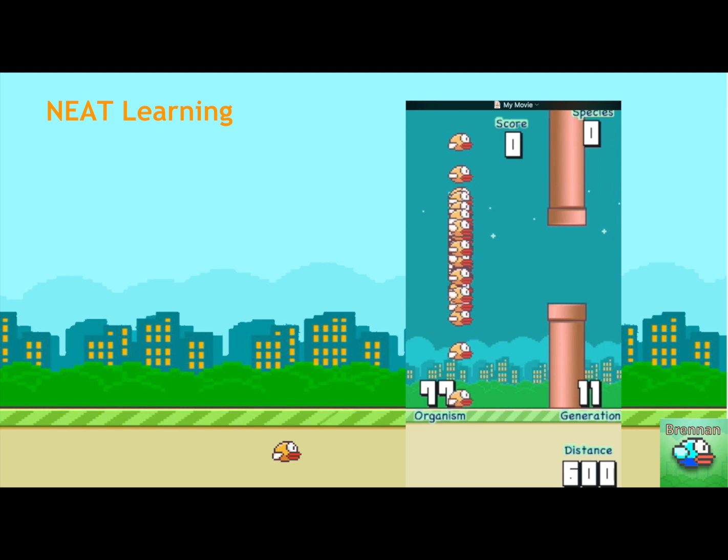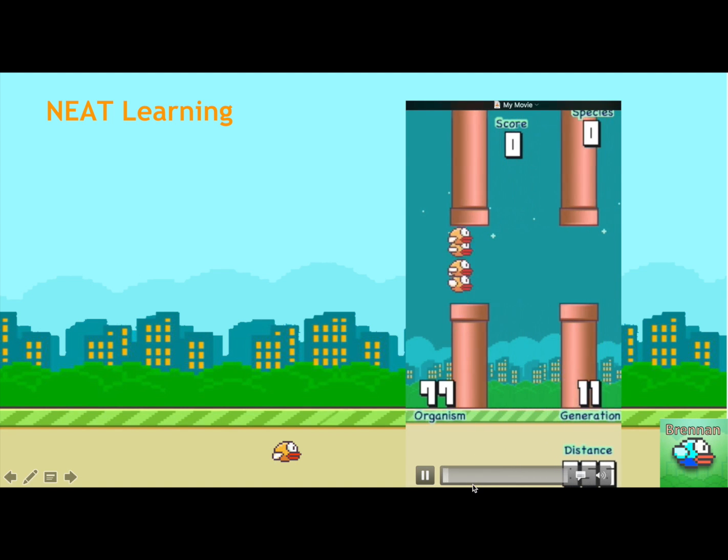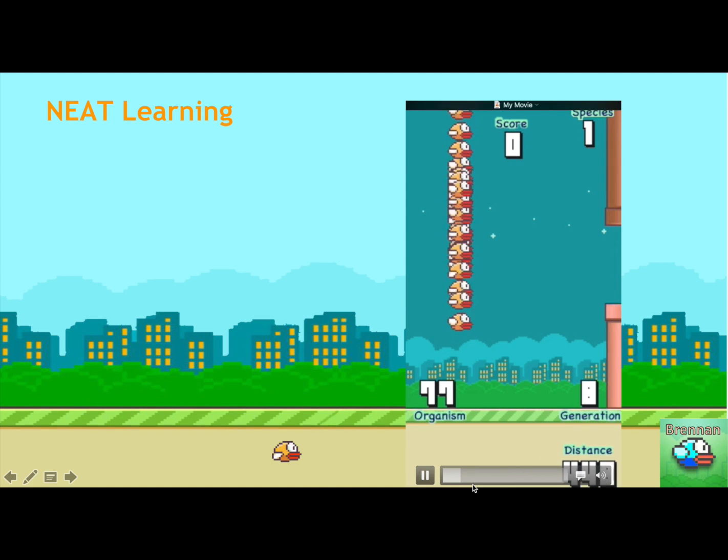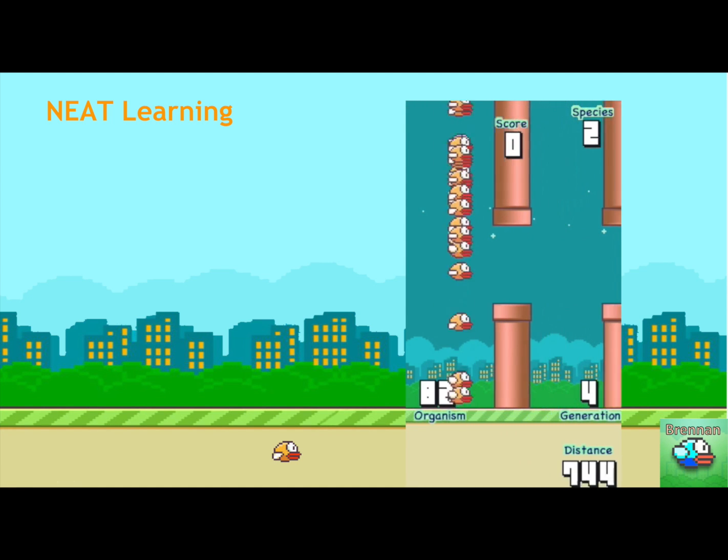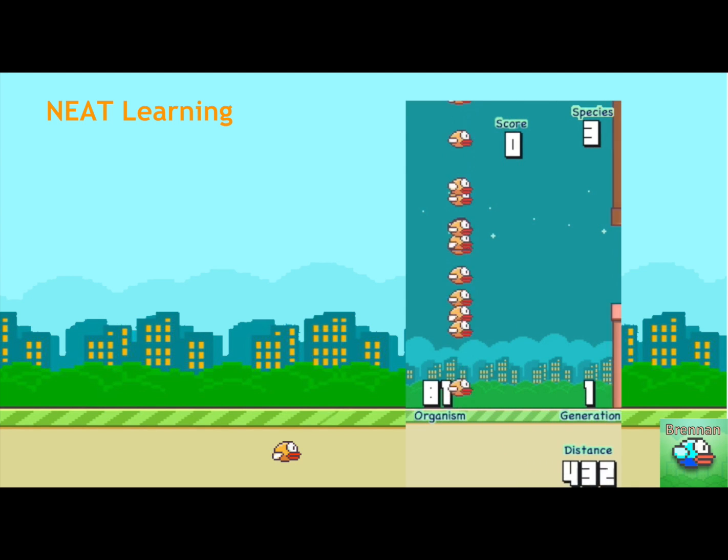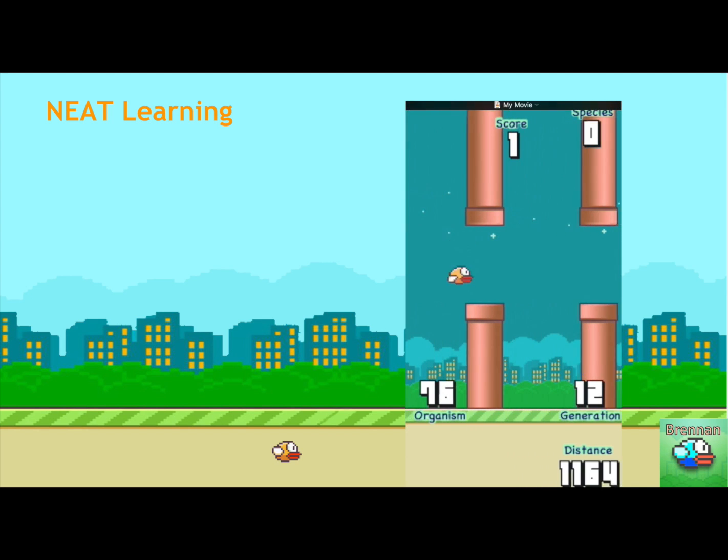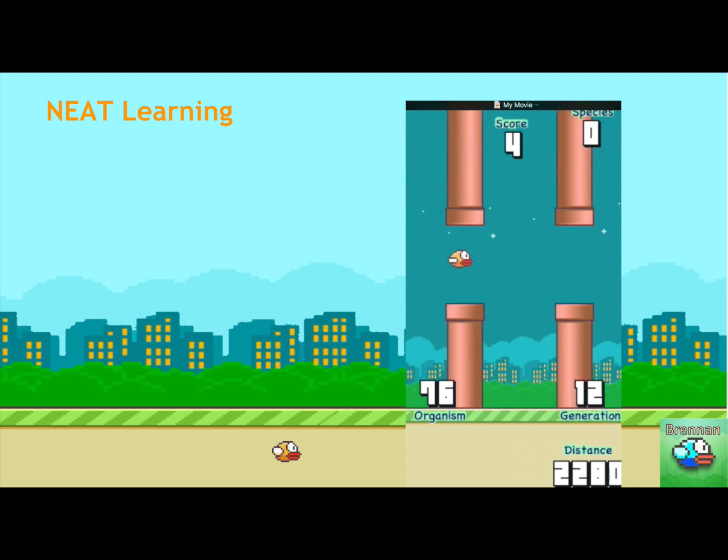And then this is an example of the NEAT algorithm learning. And you can see species tracking in the upper right-hand corner. And species three will be very erratic because it hasn't had time to optimize, whereas species zero will actually solve it this time because it only needed a very simple structure to solve this simple problem.